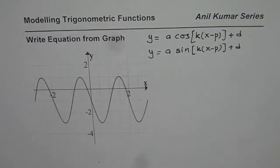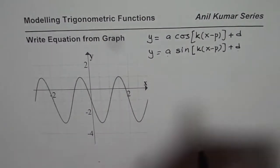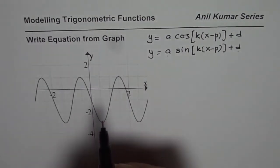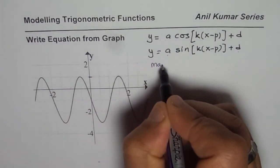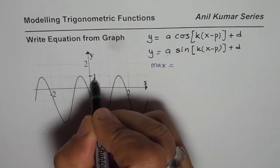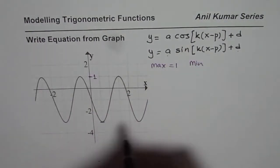In this video I will show you how we can get both equations by simple calculations. To start with, we can get the value of a and d from the maximum and minimum values of the graph. Let's write down what is the maximum value. We can read from the graph the maximum value is 1 and the minimum value is minus 3.